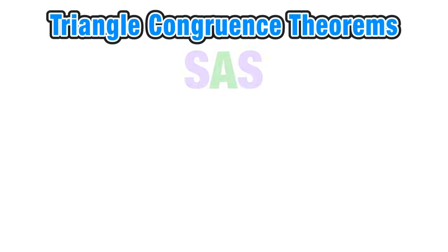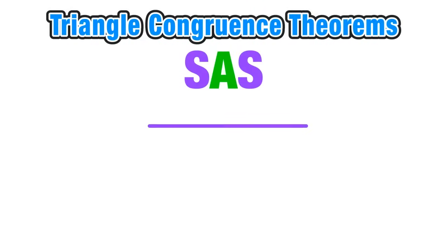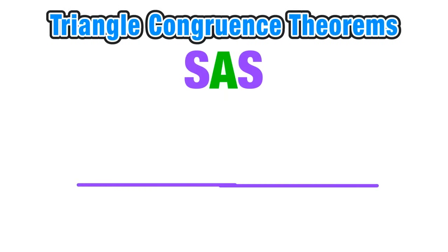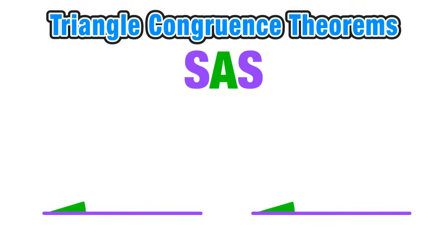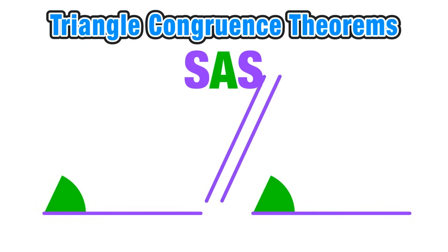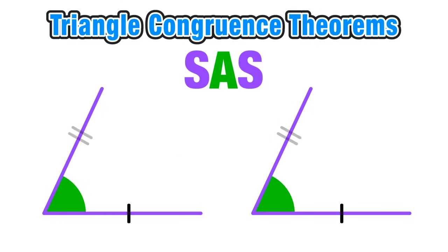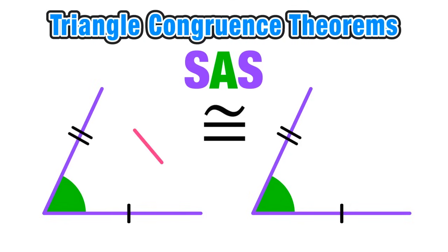Our next theorem is side-angle-side. For this theorem we start with a pair of corresponding congruent sides in two triangles, a pair of corresponding congruent angles, and another set of corresponding congruent sides. Notice that the letter A is in between the two S's in the name of the theorem — this corresponds with the congruent angle being in between the two congruent sides. When this is the case, we have enough information to say that the two triangles are congruent by the side-angle-side theorem.